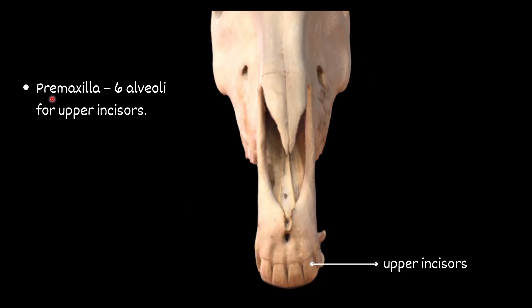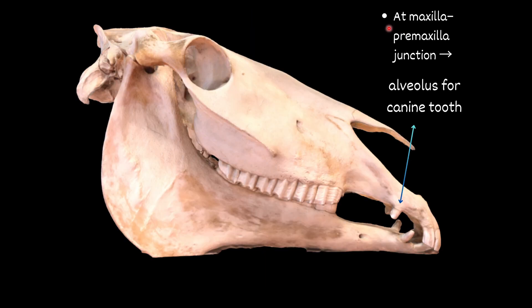In the premaxilla, we will find six alveoli or sockets for the upper incisor teeth. At the maxilla-premaxilla junction, you will find an alveolus for the canine tooth.